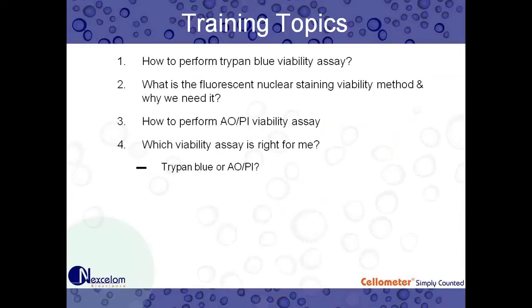Training topics: first we're going to go over the Trypan Blue viability assay, look at some cell images of Trypan Blue stain on cell lines, and do a quick example of the Trypan Blue assay on our Auto T4 software. Then we'll cover what is the fluorescent nuclear staining viability method and why do we need it, how to perform the AOPI viability assay, and which viability assay is right for you — Trypan Blue or AOPI.